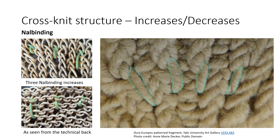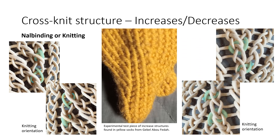These are sometimes easier to see from the technical back of the fabric. You can see these types of increases in the stitch patterning of the fragment from Dura Europa, Syria, dating prior to 256 CE, of which this is a close-up, while primarily it uses the middle example, going back two rows deep. In the pomegranate motif, there is one increase going back three rows deep, the one on the left.